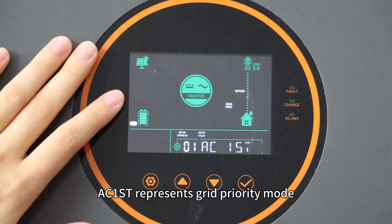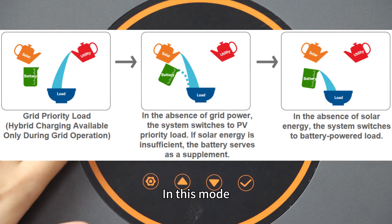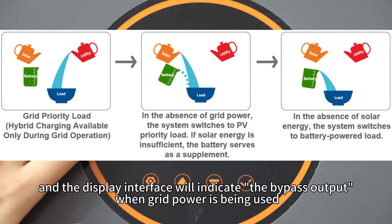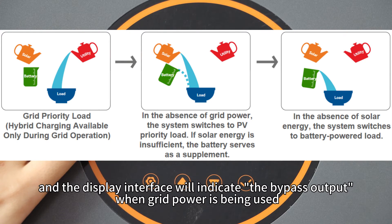AC1SC represents the grid priority mode. In this mode, grid power takes the highest priority in supplying the load, and the display interface will indicate the bypass output when grid power is being used.